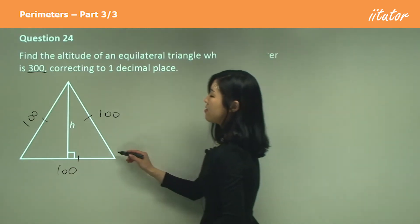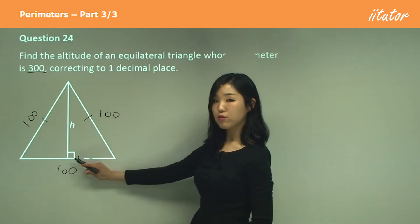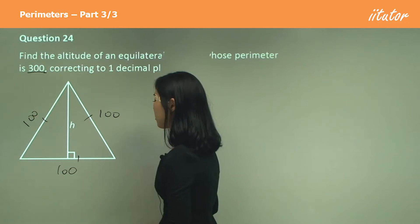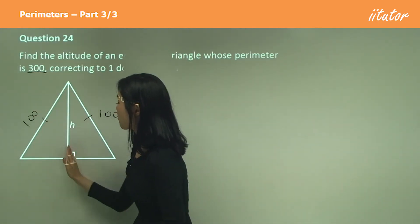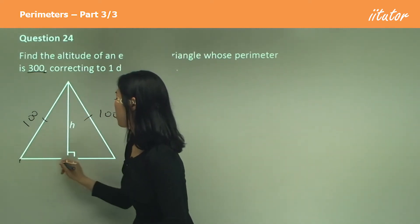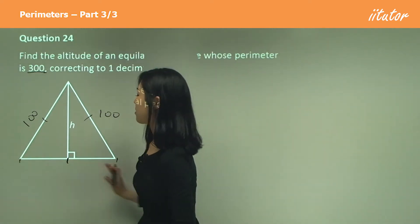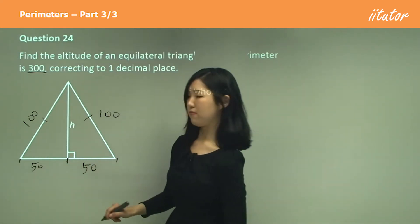You can see that this half of an equilateral triangle is a right angle. If you draw a perpendicular line going down like that, this length is equal to this length. Because this whole length is 100, this must be 50, and this must also be 50.